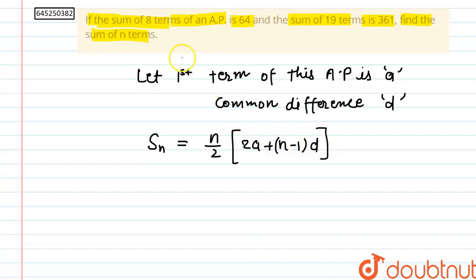So in the question it is given that the sum of 8 terms of this AP is 64, so we can say that S8 is equal to 64. And also sum of 19 terms is 361, so we can say that S19 is equal to 361.